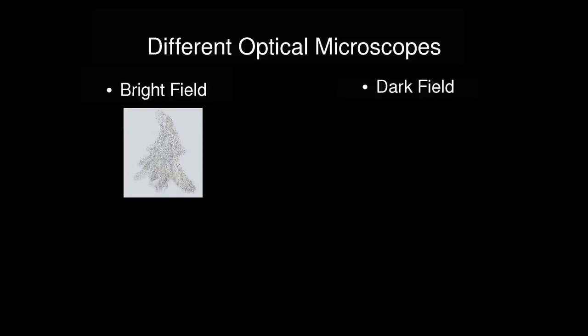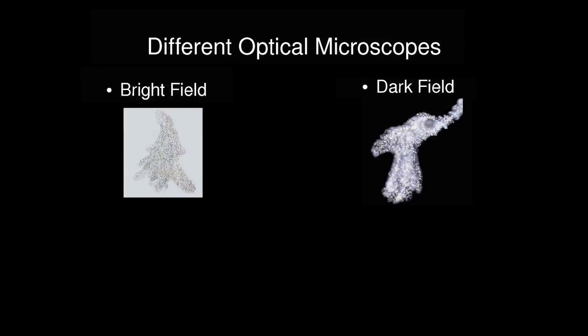Then there's also dark field, which is we shine light from the side and the image, like some of the light gets reflected from our subject down to the chip. So we get much less light because we only get the reflected light, but it gets a nice contrast because the background is perfectly black in theory. And everything that's kind of scattering and reflecting light is shown on the image.